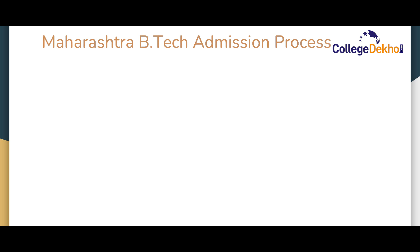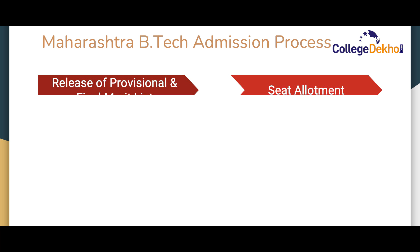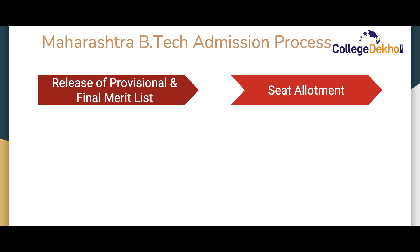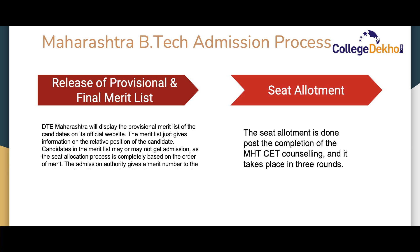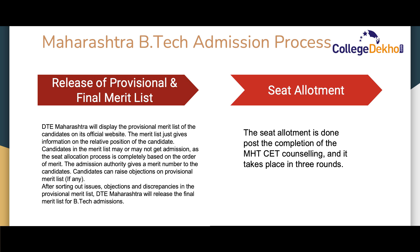It is mandatory for candidates to carry the printout of the application form for document verification. The next step is the release of the provisional and final merit list. DTE Maharashtra will display the provisional merit list on its official website, giving information on the relative position of candidates. Candidates in the merit list may or may not get admission, as seat allocation is completely based on order of merit. Candidates can raise an objection on the provisional merit list if they find any discrepancy. After resolving all issues, DTE Maharashtra will release the final merit list. The next step is the seat allotment process, conducted through MHT-CET counseling in three rounds: CAP 1, CAP 2, and CAP 3.